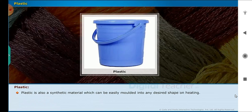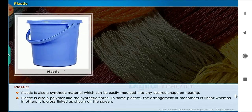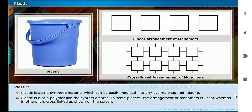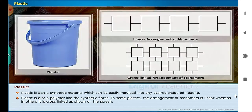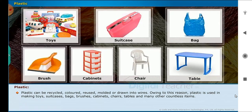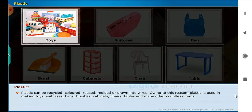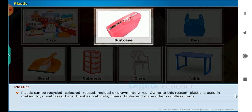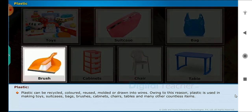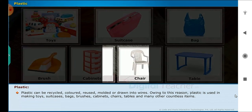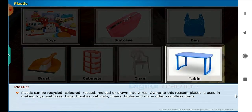Plastic is also a synthetic material which can be easily molded into any desired shape on heating. Plastic is also a polymer like synthetic fibers. In some plastics, the arrangement of monomers is linear, whereas in others it is cross-linked as shown on the screen. Plastic can be recycled, colored, reused, molded or drawn into wires. Owing to this reason, plastic is used in making toys, suitcases, bags, brushes, cabinets, chairs, tables and many other countless items.